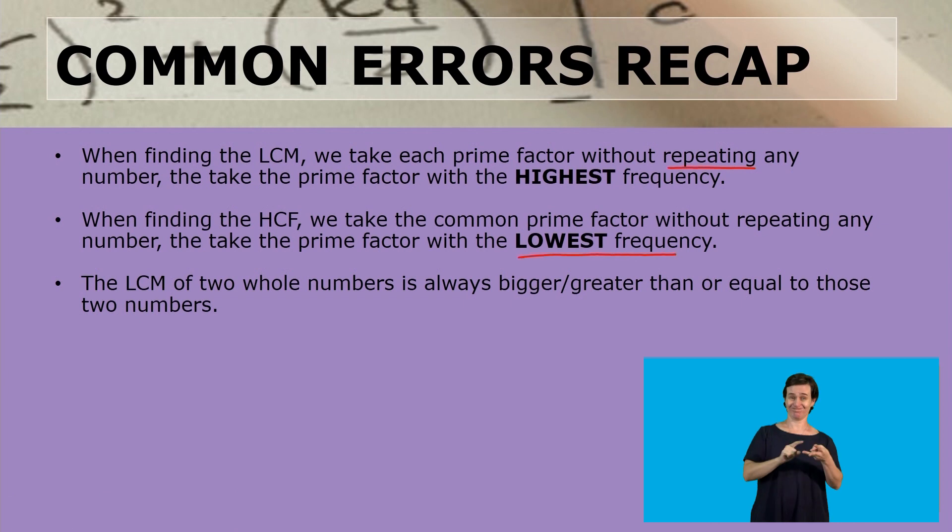Remember that the LCM of two whole numbers is always greater than or equal to those two numbers. So when you're finding the lowest common multiple and you find an answer that is smaller than those numbers, you must know you're doing something wrong.